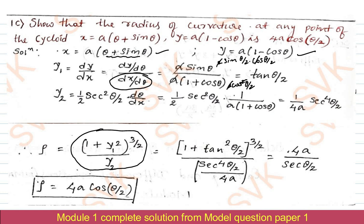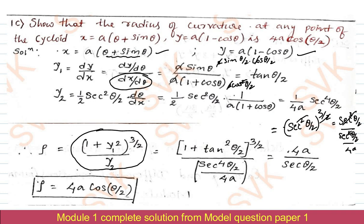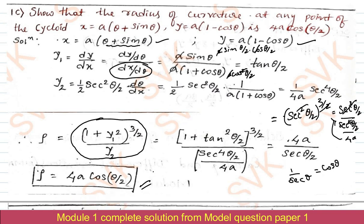Simplifying y₂ gives (1/4a)·sec⁴(θ/2). Substituting y₁ and y₂ into the formula: ρ = (1 + tan²(θ/2))^(3/2) / [(1/4a)·sec⁴(θ/2)]. Since 1 + tan²(θ/2) = sec²(θ/2), the numerator becomes sec³(θ/2). After cancellation, ρ = 4a / sec(θ/2) = 4a·cos(θ/2), which is the required result.